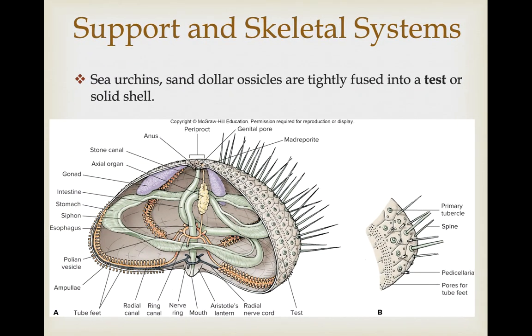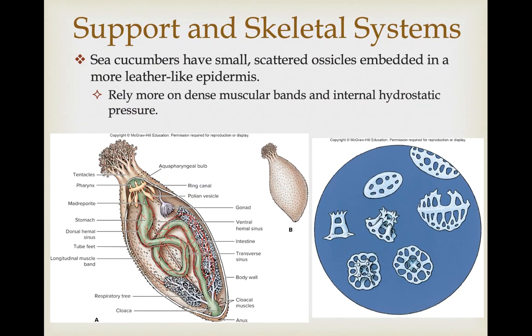Sea urchin and sand dollar ossicles are so tightly fused that they form a continuous test, or solid shell, representing a complete loss of the arm structure. Sea cucumbers have gone the opposite route — they basically have leathery skin with a few scattered ossicles embedded within it, relying more on dense muscular bands and the internal hydrostatic pressure of the coelom to maintain their body shape.